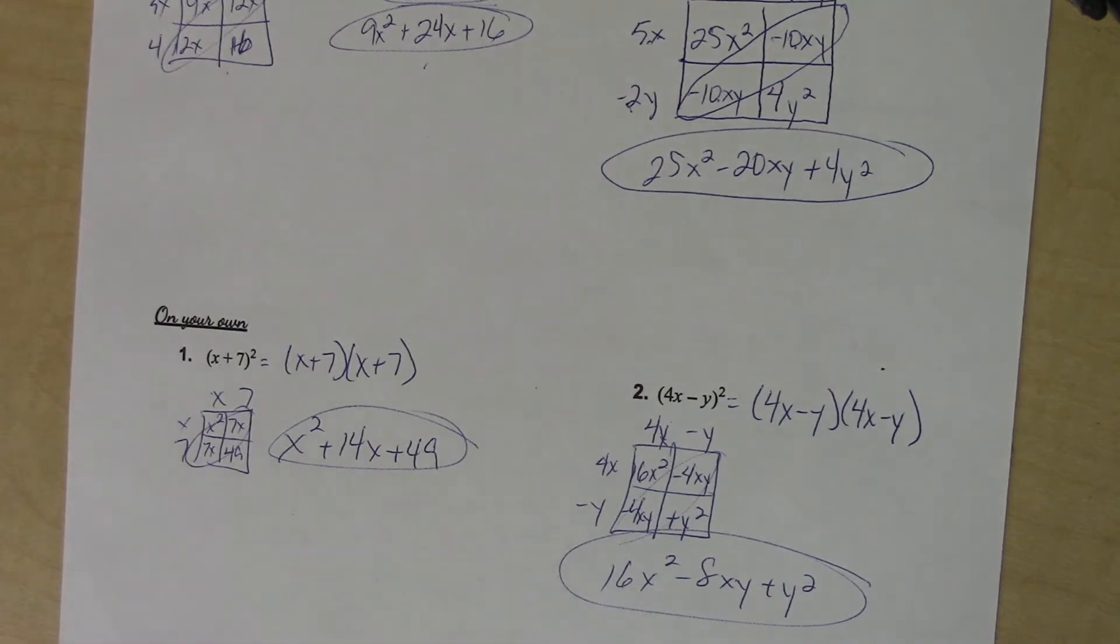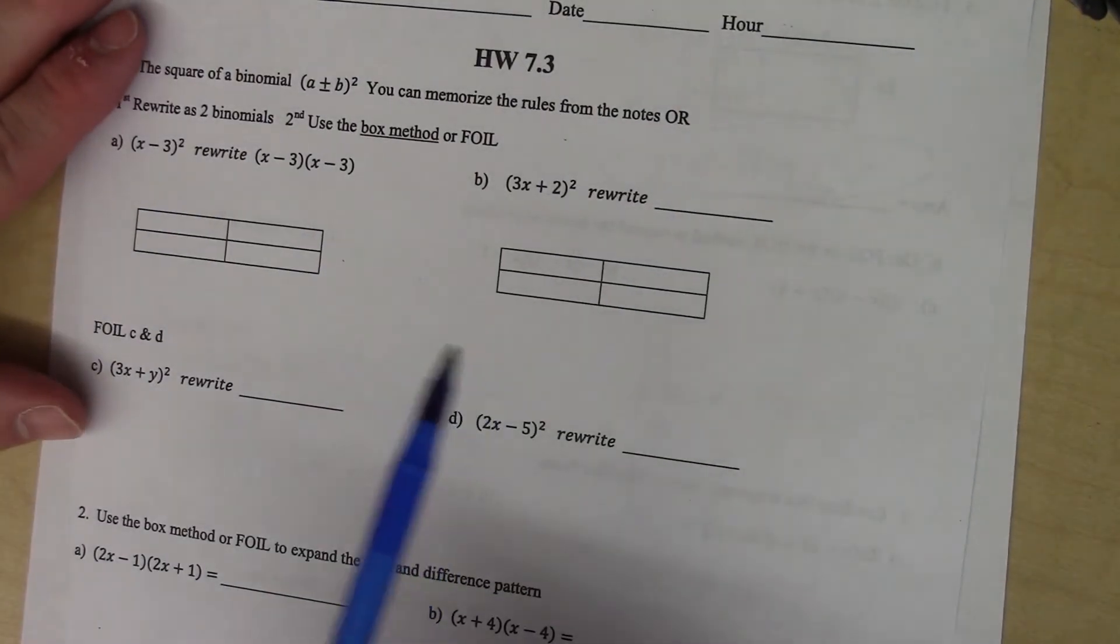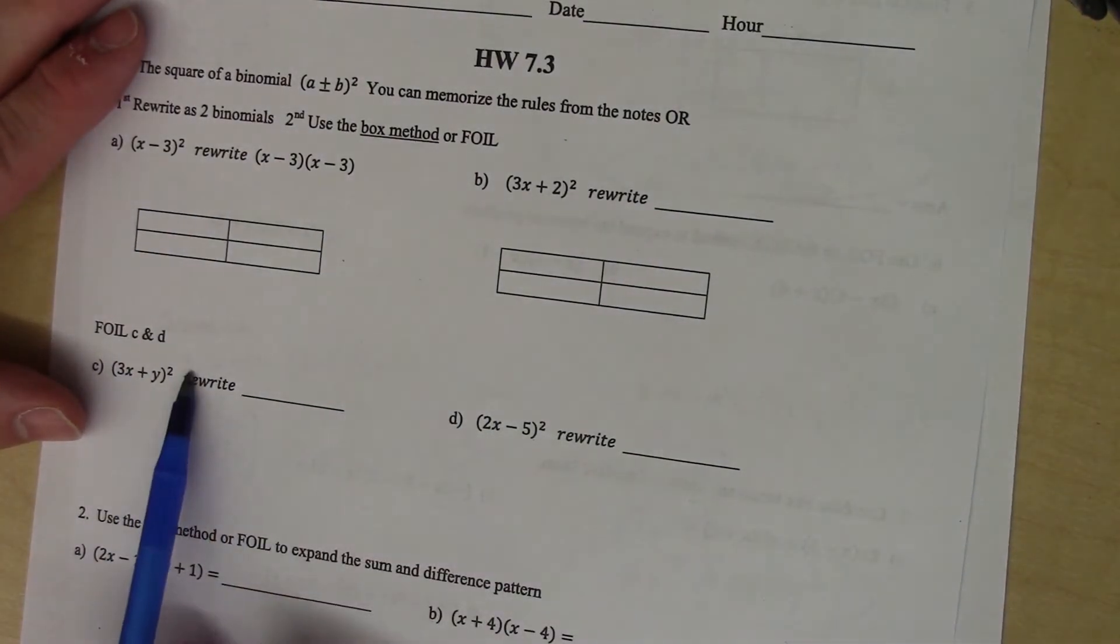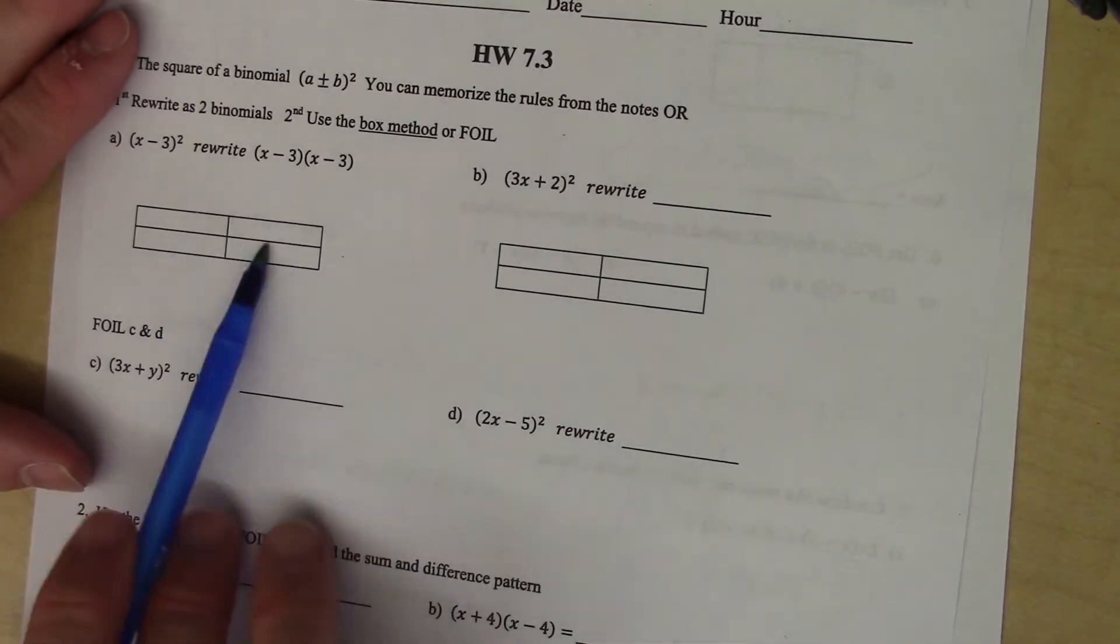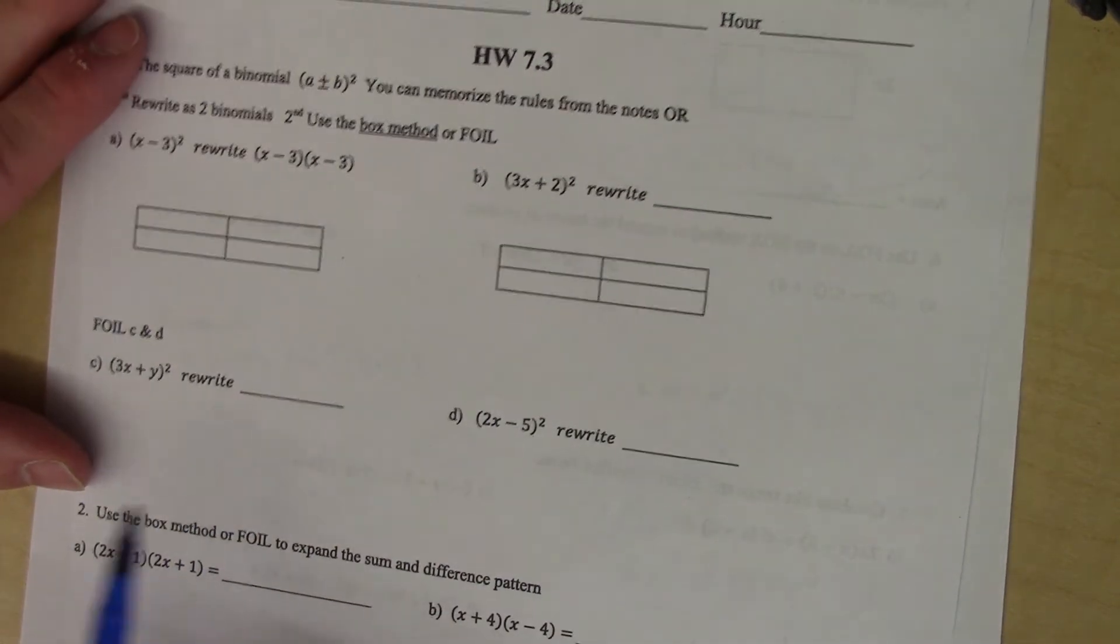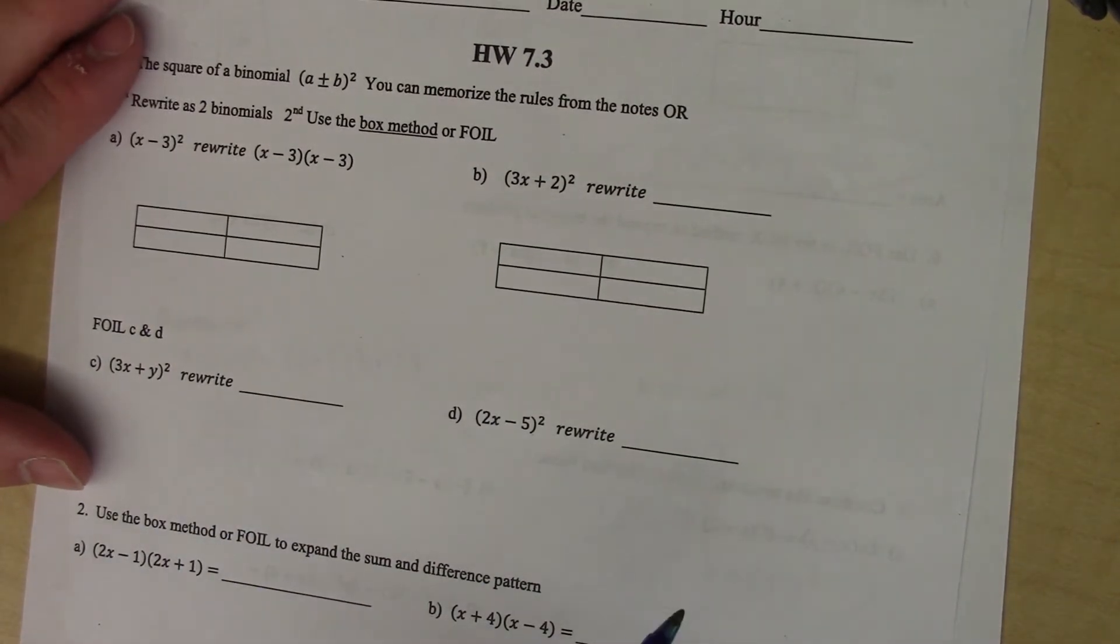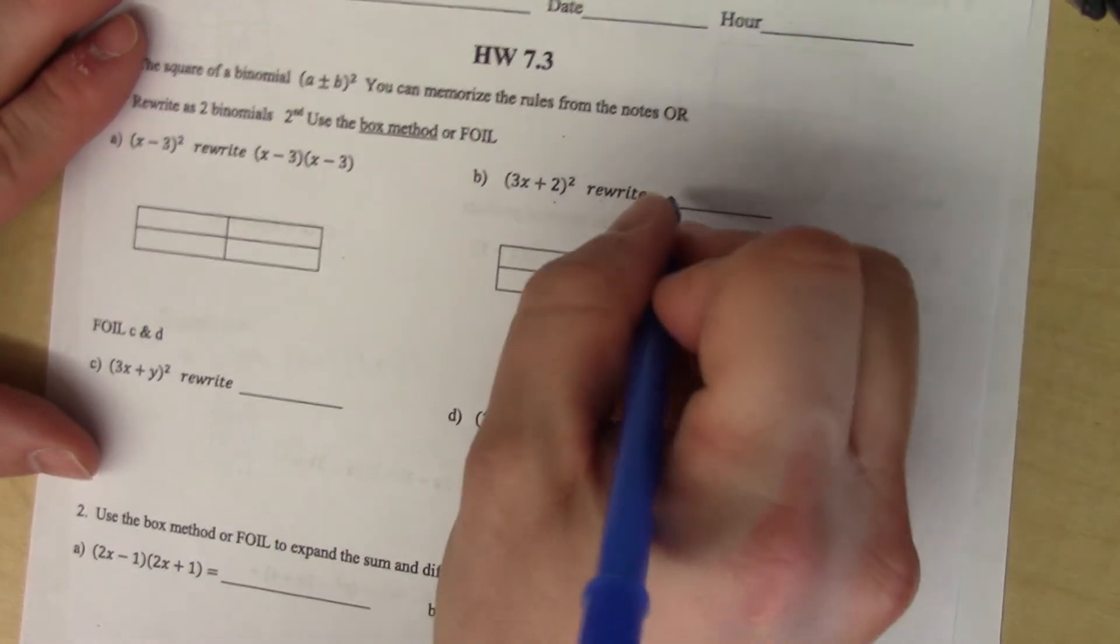All right, let's move on to the back page. When you see today's homework, it's asking you to use both the FOIL method or the box method. I don't care - if you don't want to use the box method, just use the FOIL method the whole time. If you want to use the box method the whole time, use the box method. I don't need you to do both ways.